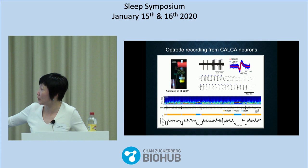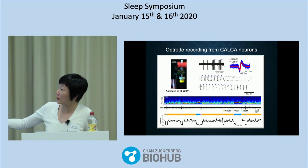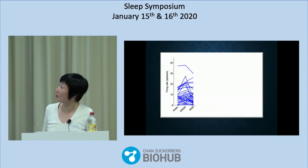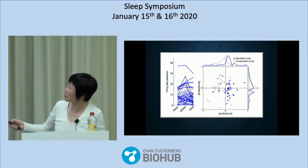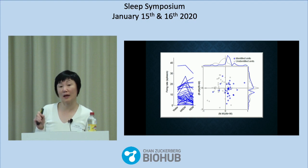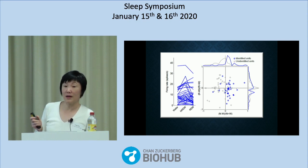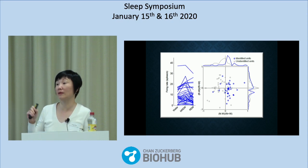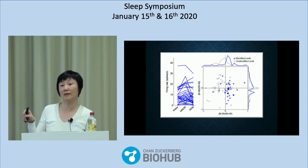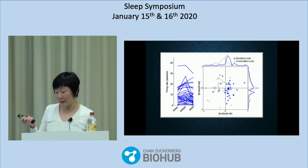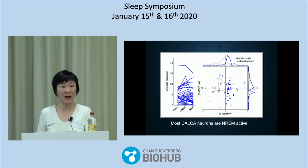Here's a longer recording showing the EEG spectrogram, EMG trace, and color-coded brain state. This neuron fires at a higher rate during non-REM — the orange periods — compared to both wake and REM. Here's a summary of about 30 CALCA neurons. Most of the identified CALCA neurons are more active during non-REM sleep compared to wake, whereas many of the unidentified neurons recorded in the same area are wake-active. So these CALCA neurons are somewhat special because most of them are non-REM active — this satisfies our first criterion.